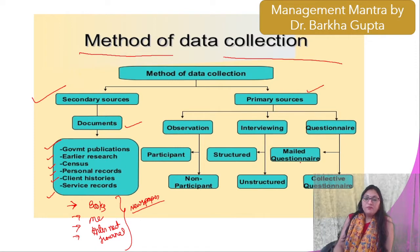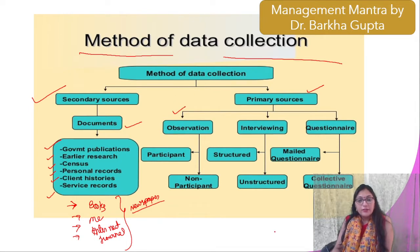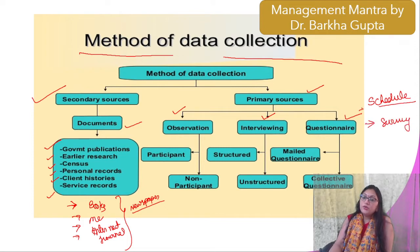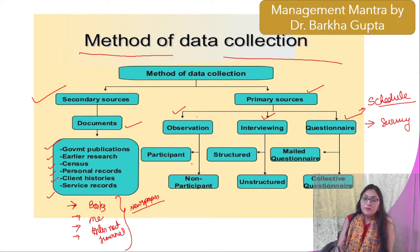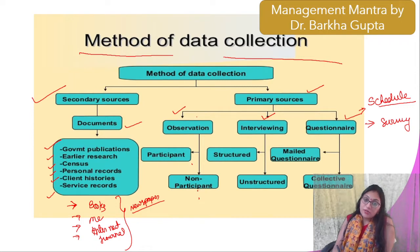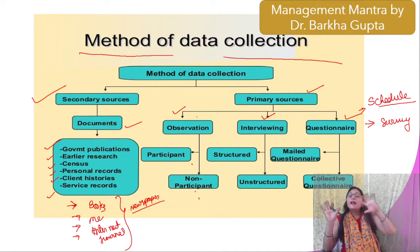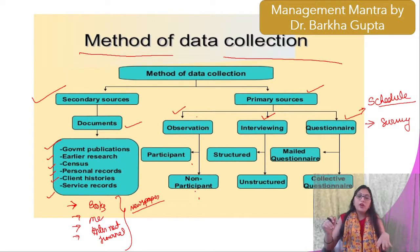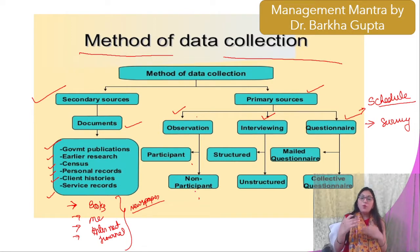For primary data, the sources include observation, interview, and questionnaire, or schedule. These are the methods for collecting primary source data. In the observation method, participant and non-participant observations are involved. Observation means you are analyzing and seeing things and then preparing your record.